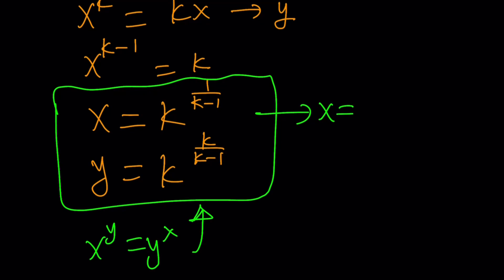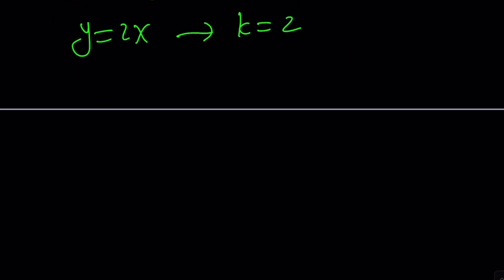This gives us x equals 2 to the power 1 over 1, which is 2. And then y equals 2 to the power 2 over 1, which is 2 to the power 2, which is 4. Oh, great. We got the solution from this formula right away. But let's go ahead and do it without knowing this general formula. Let's pretend we don't.